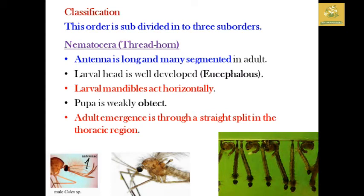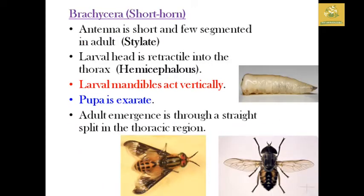Seeing the classification, Diptera is divided into three suborders. First is Nematocera, the thread-horn group. The antenna is long and many-segmented in adults. Larvae have well-developed heads. Larval mandibles act horizontally. The pupa is weakly adecticous, and adult emergence is through a straight split in the thoracic region.